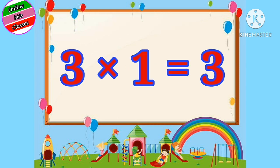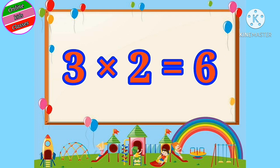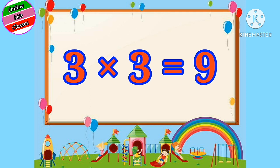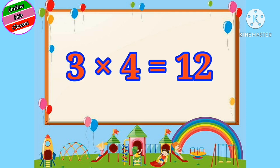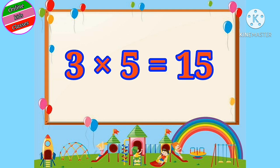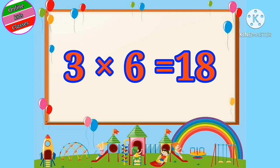Three ones are three. Three twos are six. Three threes are nine. Three fours are twelve. Three fives are fifteen. Three sixes are eighteen.